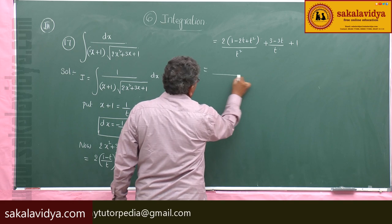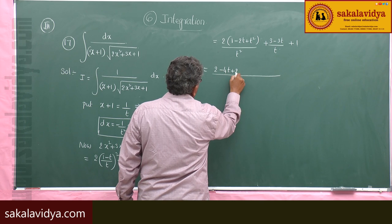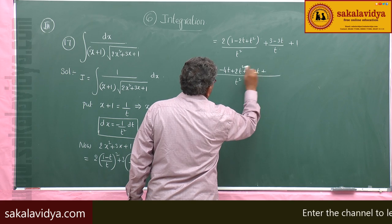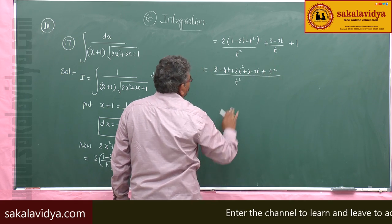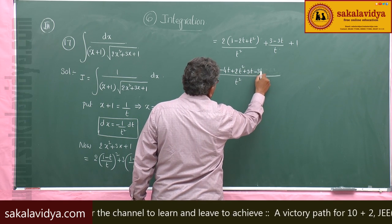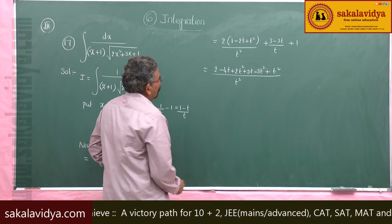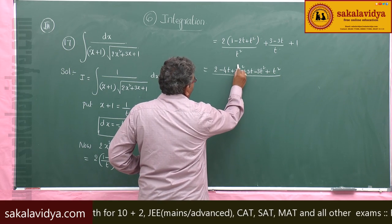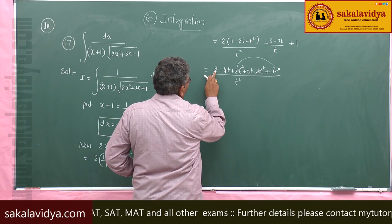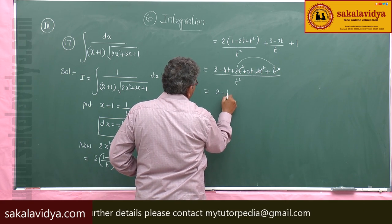Taking t squared as the LCM, we get 2 minus 4t plus 2t squared plus 3t minus 3t squared plus t squared, all over t squared. Collecting terms: 3t squared terms cancel, giving (2 minus t) by t squared.